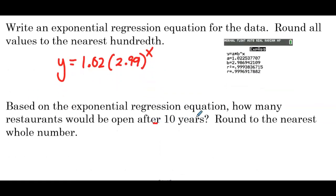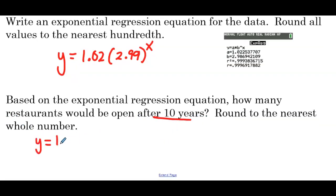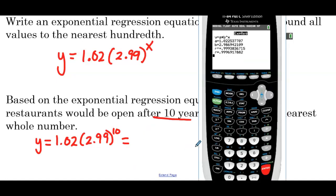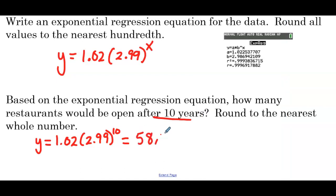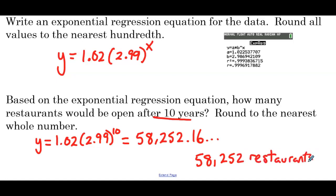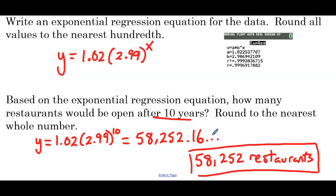Based on the exponential regression equation, how many restaurants would be open after 10 years? Round to the nearest whole number. We're plugging in 10 for x: 1.02 times 2.99 to the 10th. On the calculator: 1.02 times 2.99 to the 10th power, hit enter — 58,252.16. Rounding to the nearest whole number, that's 58,252 restaurants they would have opened if they continue this growth trend after 10 years.